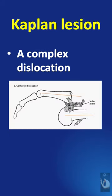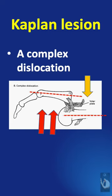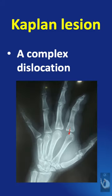But in a complex dislocation or Kaplan lesion, the proximal phalanx will be almost parallel to the metacarpal axis, and the avulsed volar plate will be between the bones. The axis of the proximal phalanx will not intersect the head of the metacarpal.